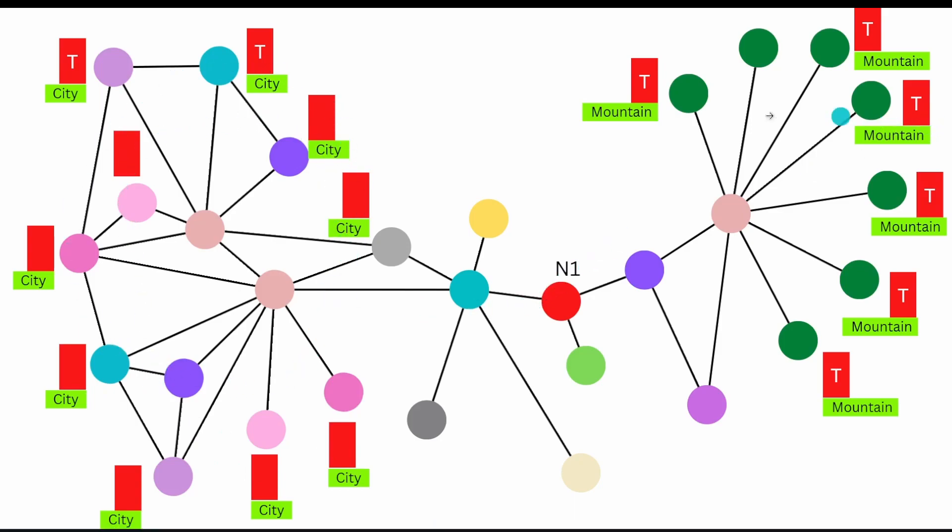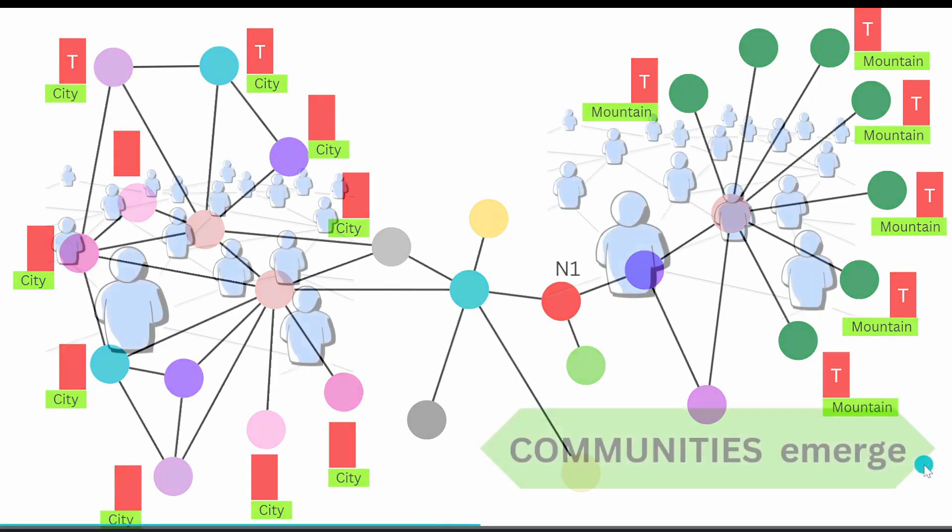On the other side, if you look into the feature tensors of our nodes, or maybe the edge tensors, there's a hint that those people have a common feature. Those communities, for example, live somewhere in a mountain.